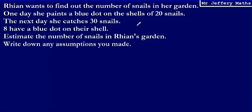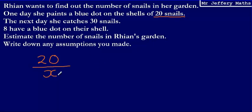Like we did in the first question, we're going to pick out what happened on the first day. On the first day, Rhian caught 20 snails out of the total population in her garden, which we don't know, so we'll call it X. Then on the second day, Rhian caught 30 snails and of those 30 snails, eight had a blue dot on their shell — so eight out of 30 had a blue dot.